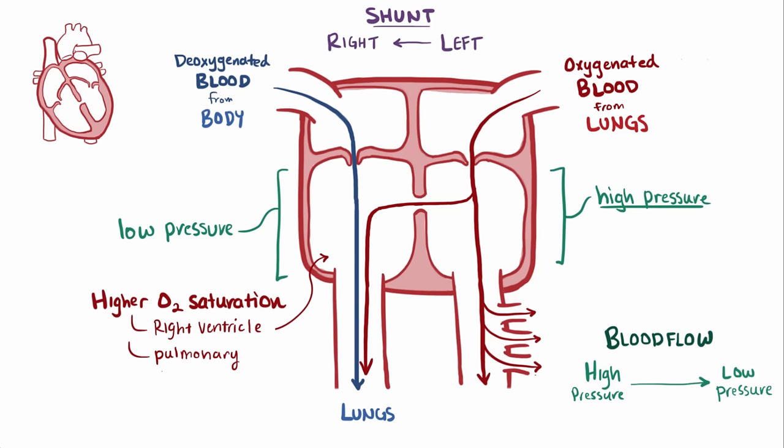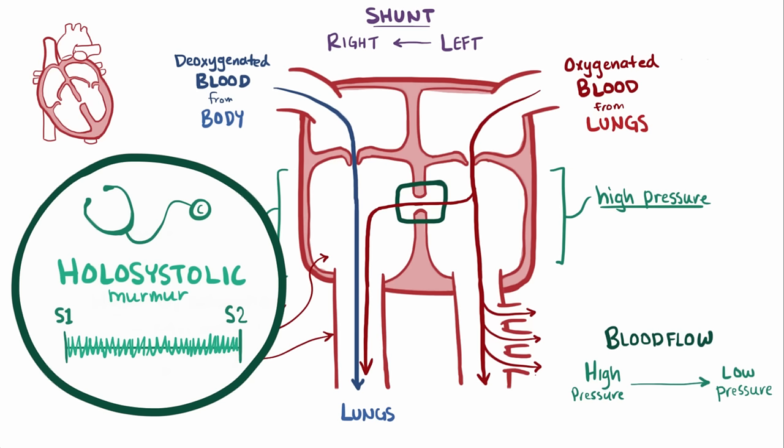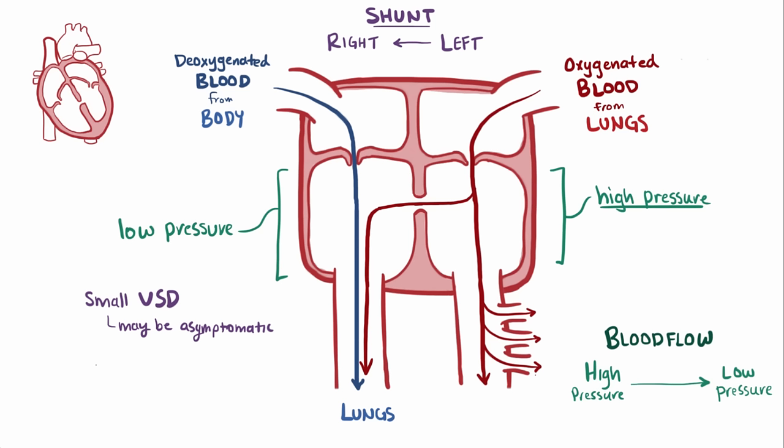That blood flowing through the VSD can be heard as a holosystolic murmur at the lower left sternal border. If it's a small VSD, it might be asymptomatic, but as the size of the VSD increases, symptoms tend to get more severe and present earlier on in life.